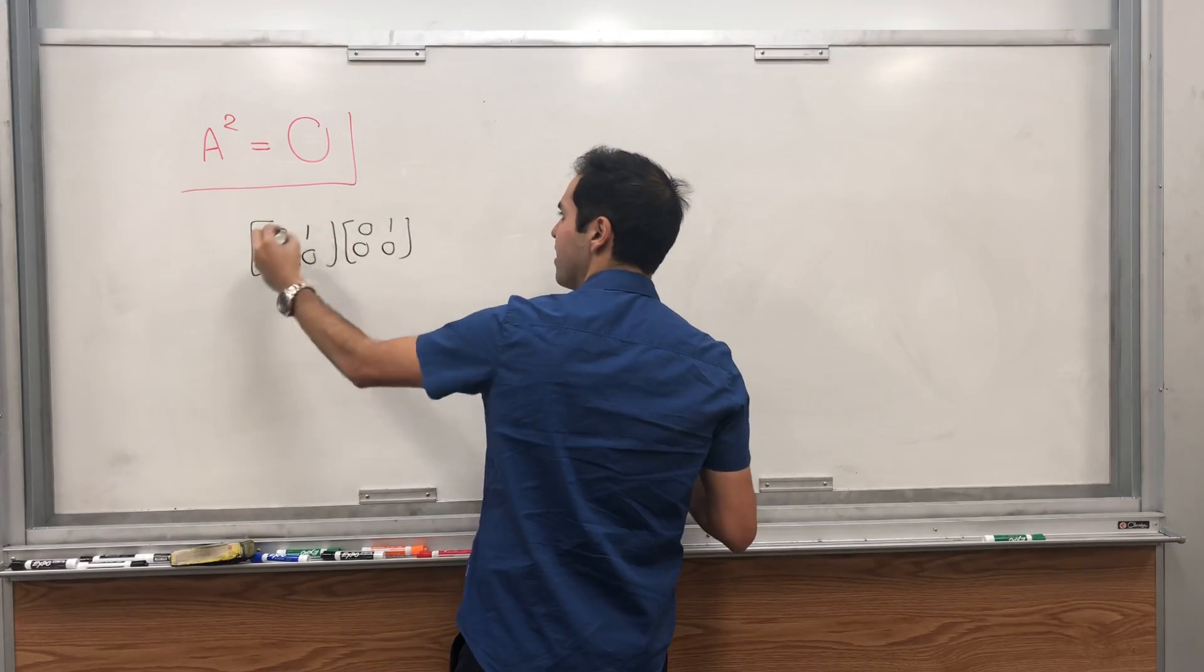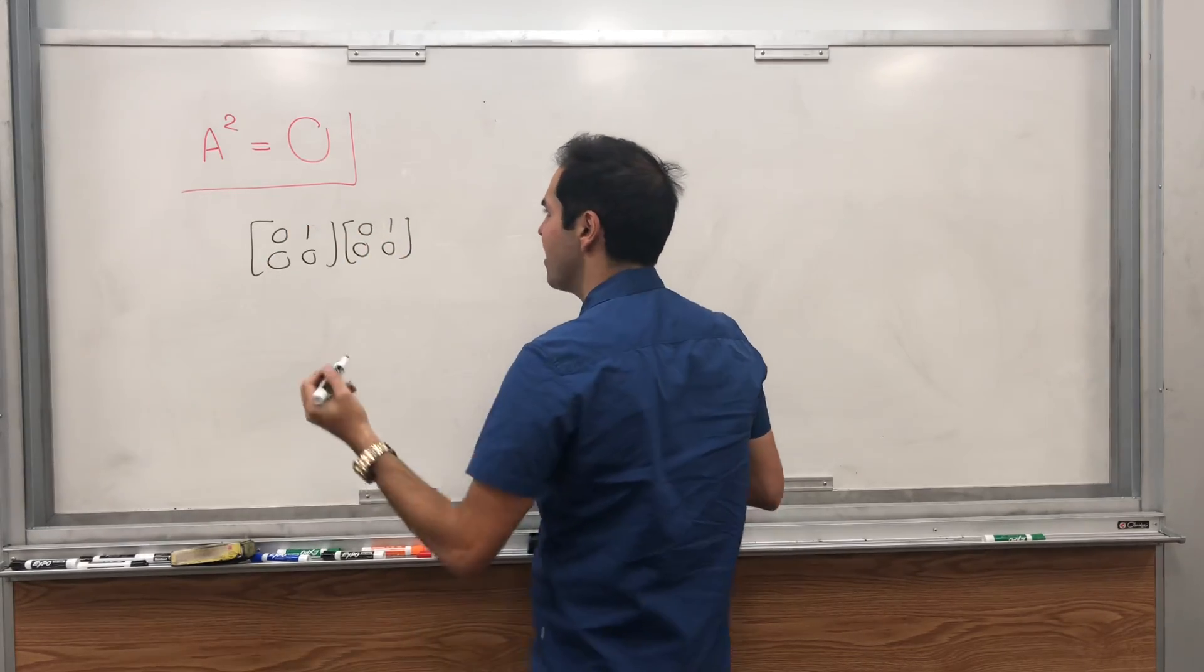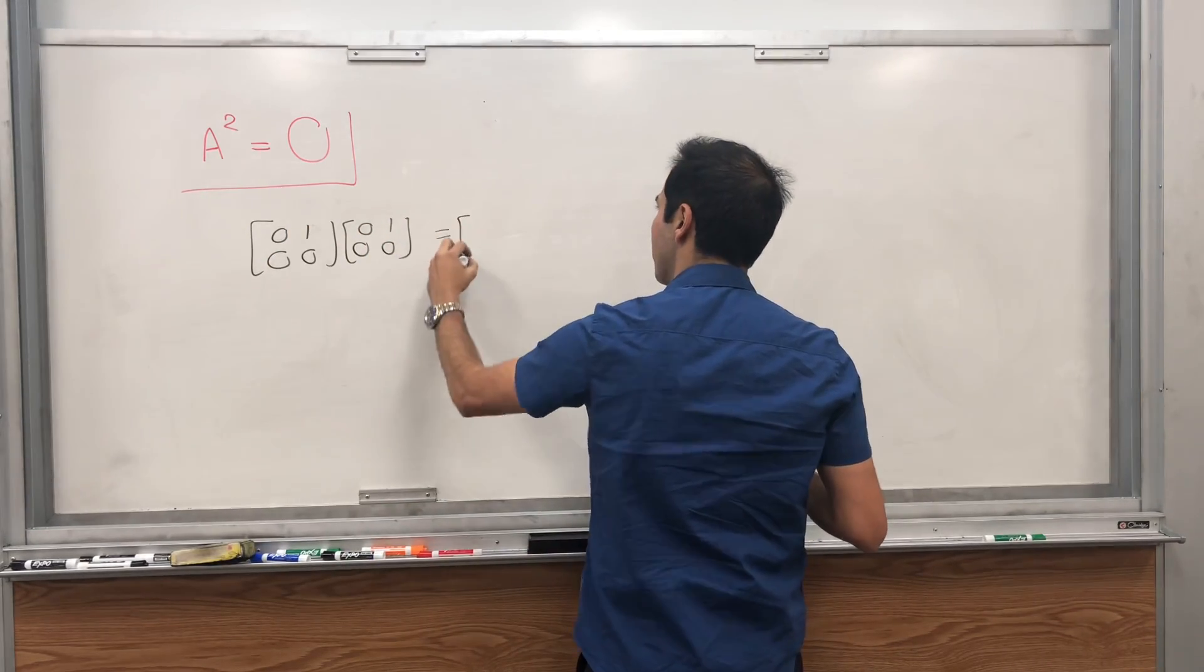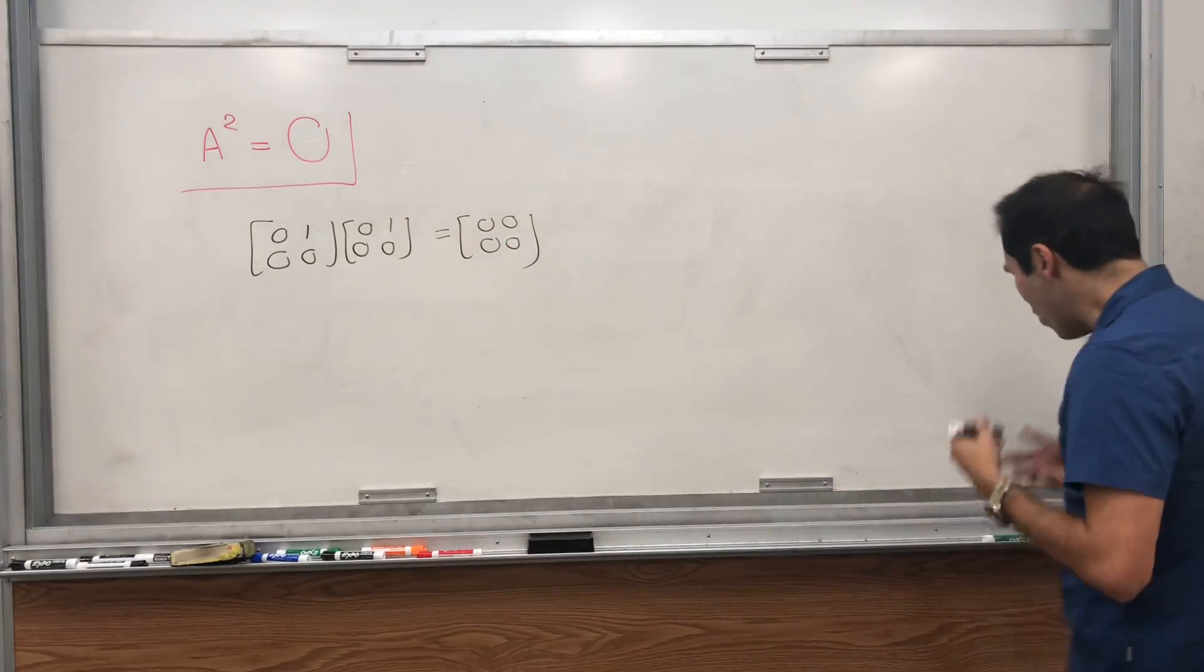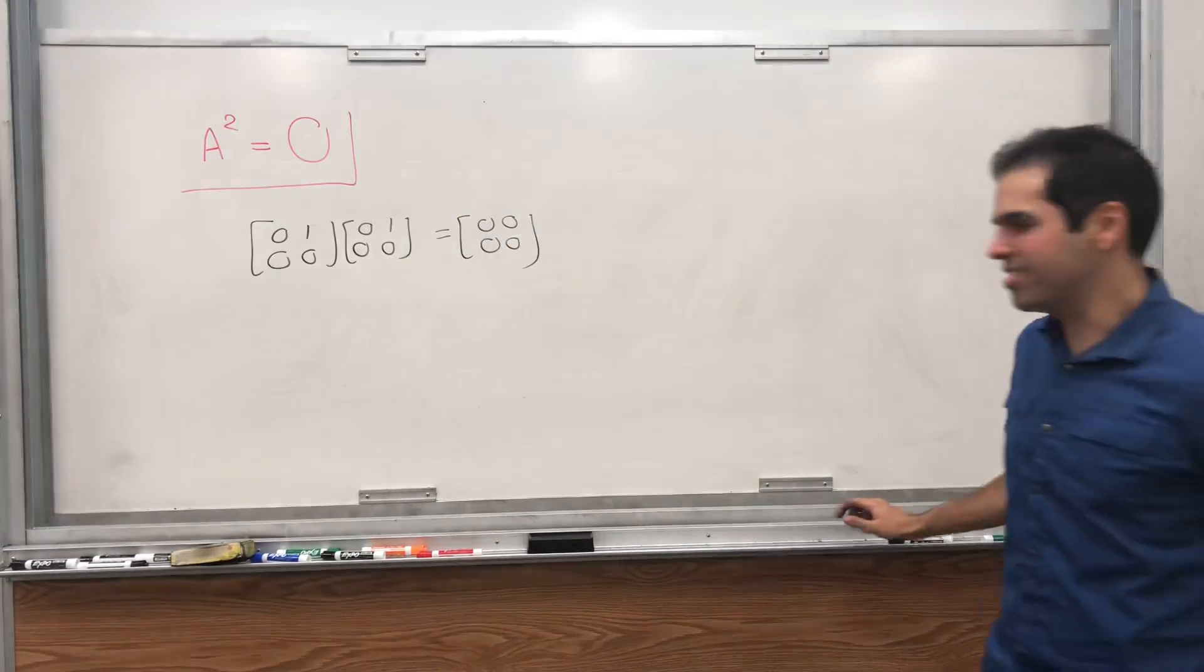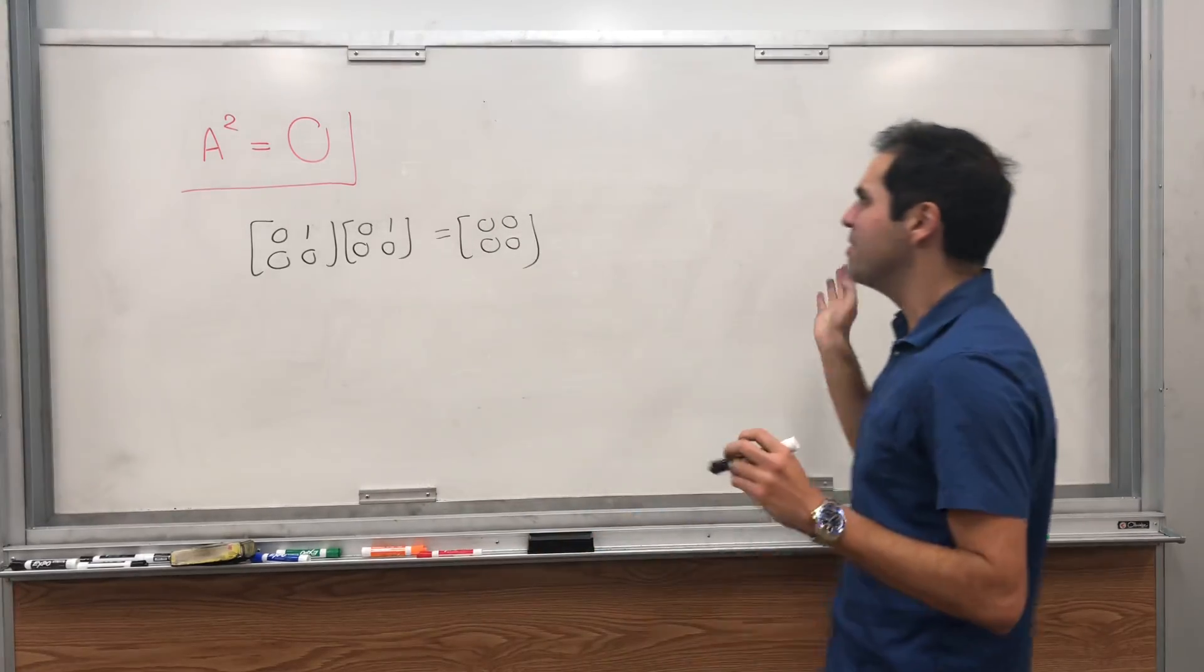If you calculate this, you do get that the square of this is the zero matrix, and the question is, what do all those matrices look like? So I'll give you a general form.